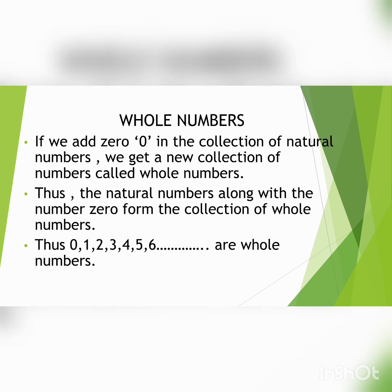Now, what are whole numbers? If we add 0 to the collection of natural numbers, we get a new collection of numbers called whole numbers. Thus, the natural numbers along with the number 0 form the collection of whole numbers. So we can say that 0, 1, 2, 3, 4, 5, 6, 7, 8, 9, and so on are whole numbers.